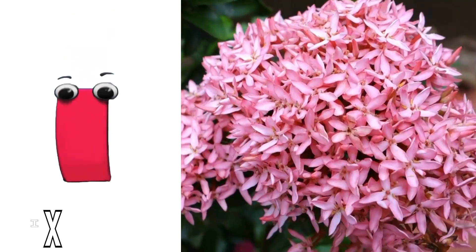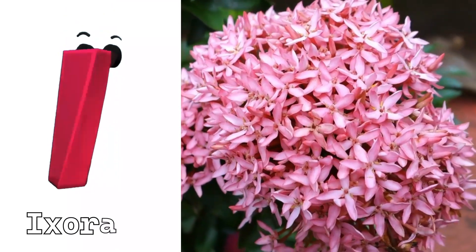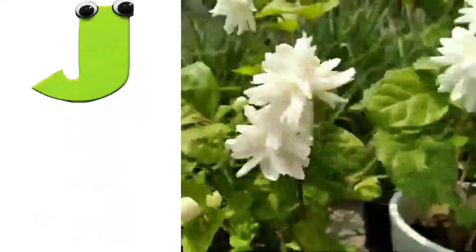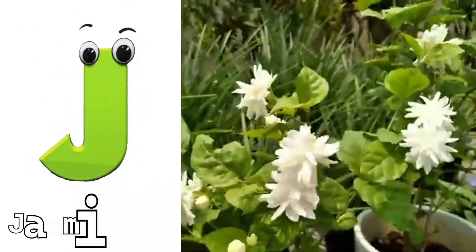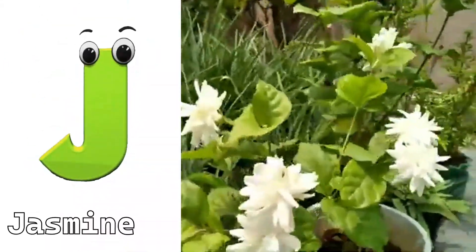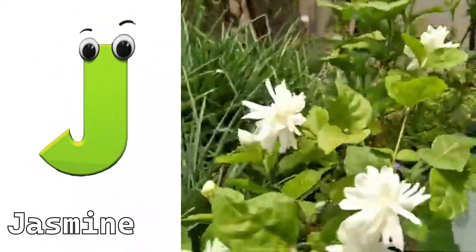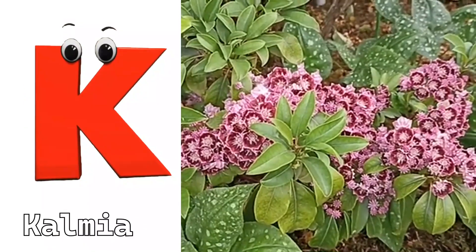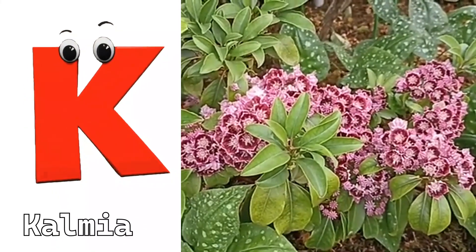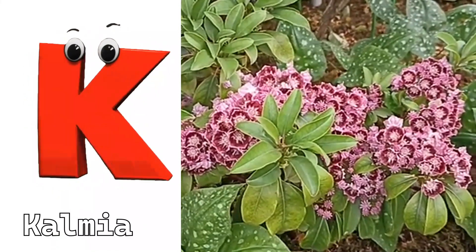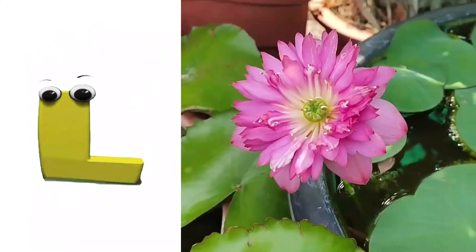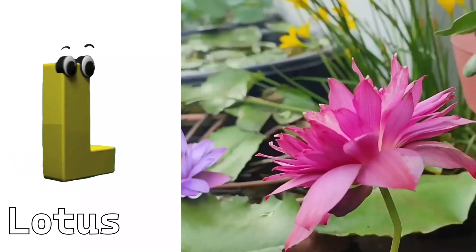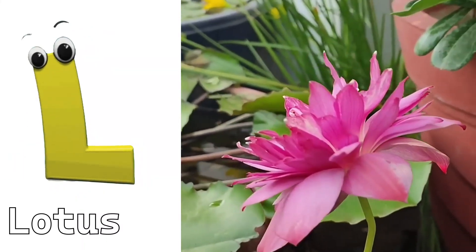I is for Exora. J is for Jasmine. K is for Kalmia. L is for Lotus.